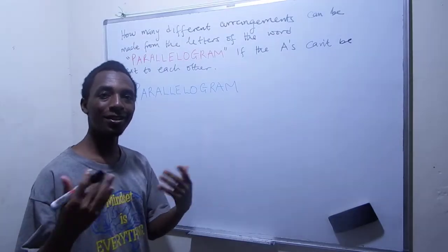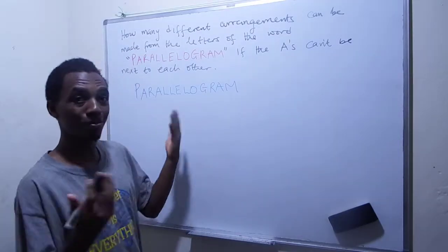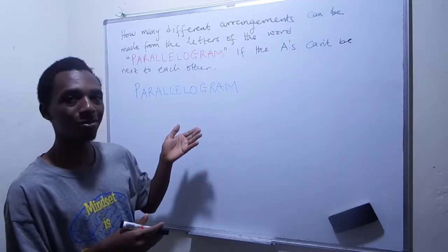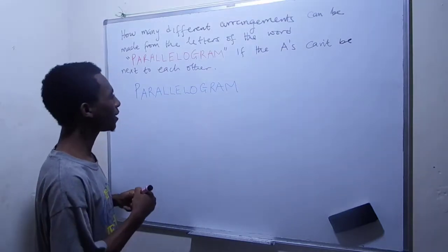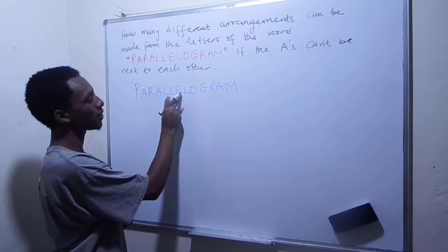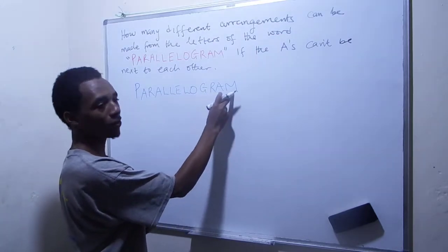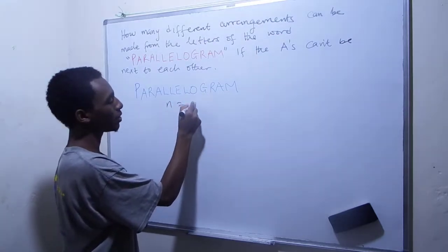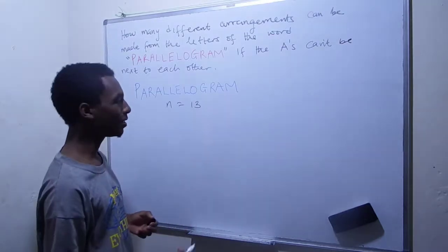So what I'm going to do first is to find the total number of arrangements or permutations for that matter that can be formed from this word here. So let's see how many items these are. 1, 2, 3, 4, 5, 6, 7, 8, 9, 10, 11, 12, 13.